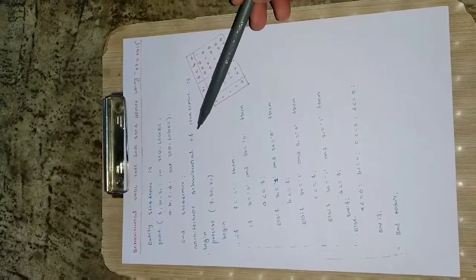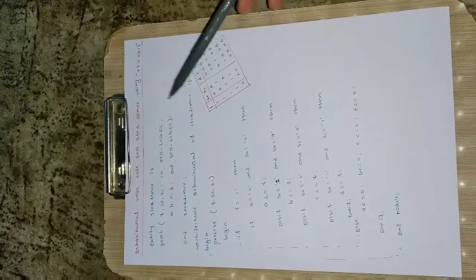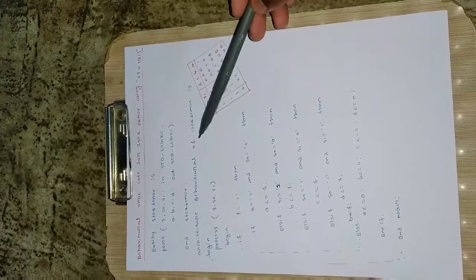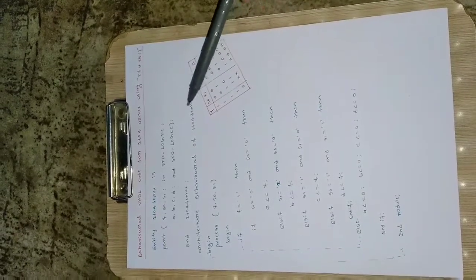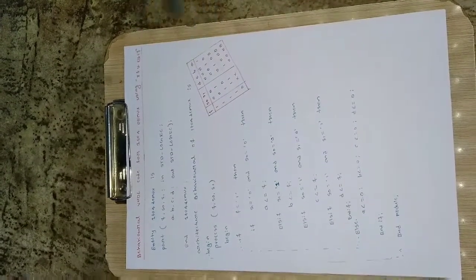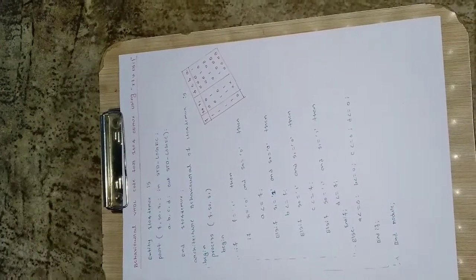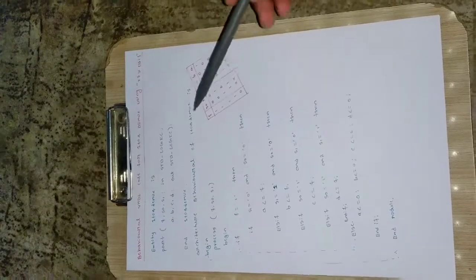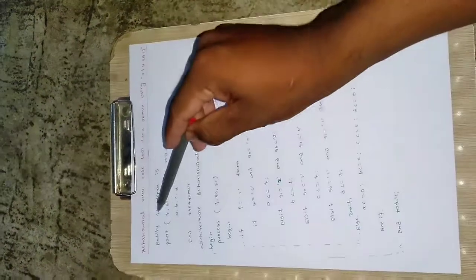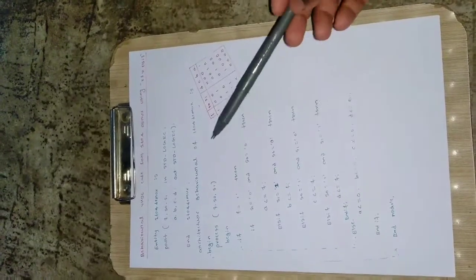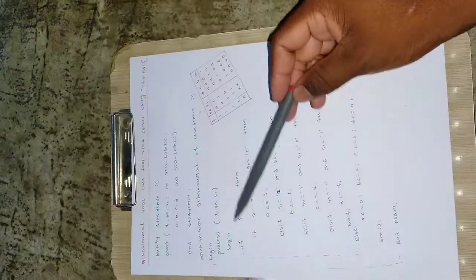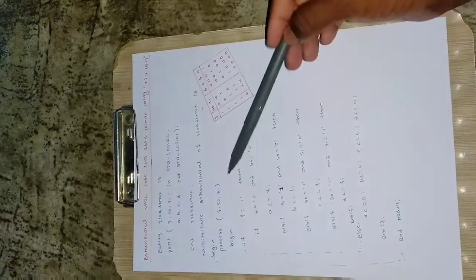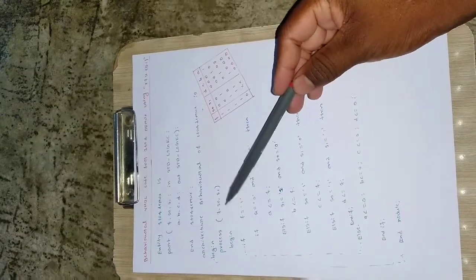We have defined the entity; now it's time to call it. Architecture behavioral of 1_to_4_DMUX is — make sure you use the same entity name here, otherwise it will throw an error saying the entity is not defined. Then begin, then process the inputs. The inputs in the sensitivity list are F, S0, and S1. Then for this process we will have a begin.